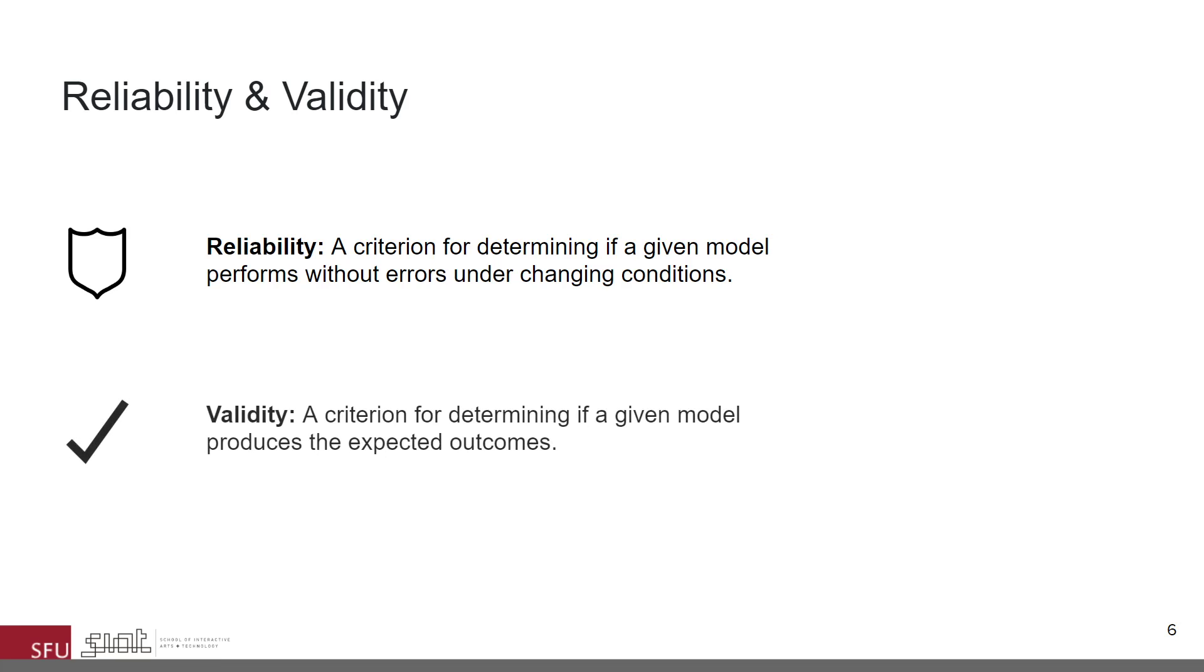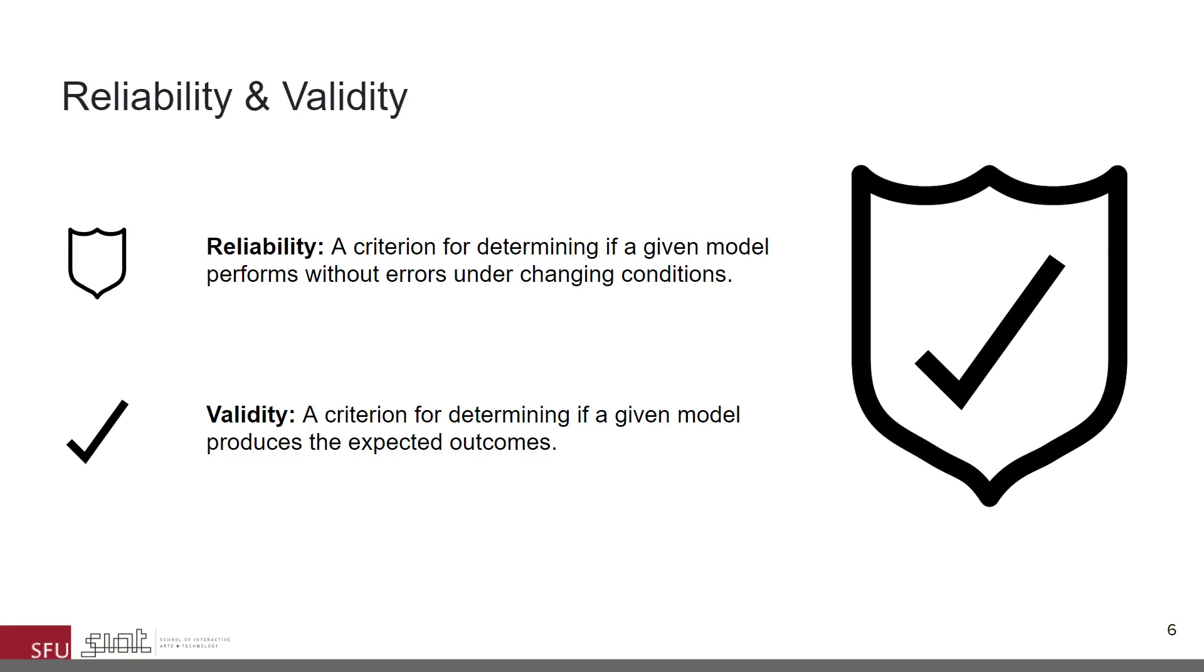It is essential that these parametric models are reliable and perform as intended, and like computer programs, they must be tested for their reliability and validity, with a caveat that the testing method should be unique for design modeling. We define reliability as a criterion for determining if a given model performs without errors under changing conditions, and we define validity as a criterion for determining if a given model produces the expected outcomes. What we aim for is to have both.